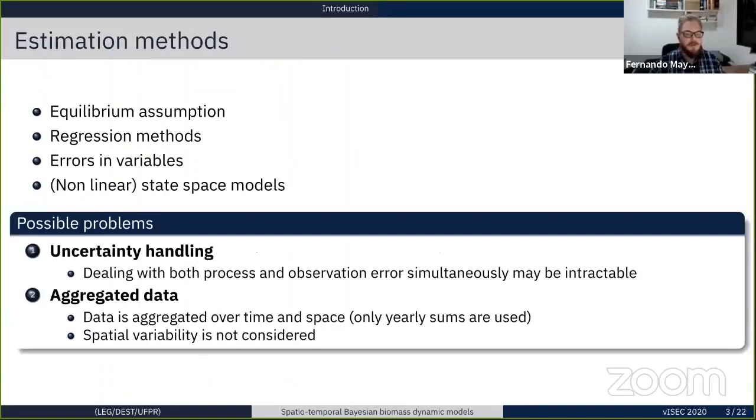Several estimation methods were developed through the years, starting from equilibrium methods, which showed not to be a very good idea. After there were regression methods, then errors in variables, and ultimately the state space framework. All these methods have their pros and cons, but a common problem is the way errors are considered in previous equations, as dealing with both process and observation errors simultaneously may be intractable.